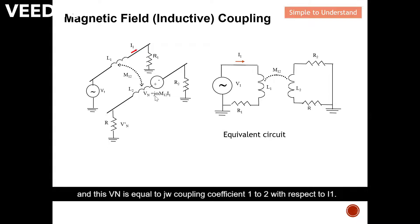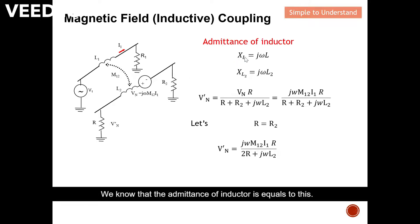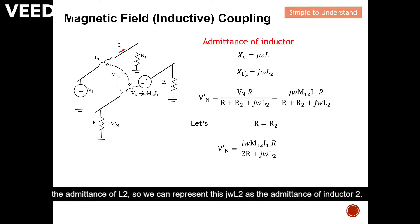This Vn is equal to j-omega times the coupling coefficient M12 with respect to I1, where I1 is the current flow in conductor one. This is the amount of noise that couples over. We know that the impedance of an inductor equals j-omega-L. Omega is 2-pi-f. So if we want to find the impedance of L2, we can represent it as j-omega-L2.